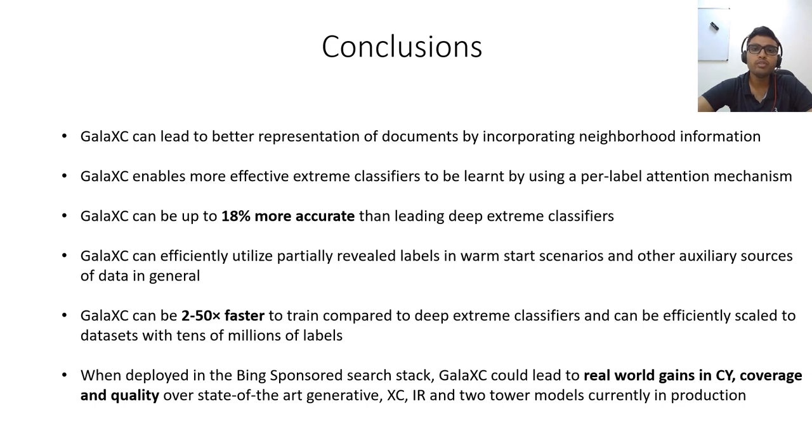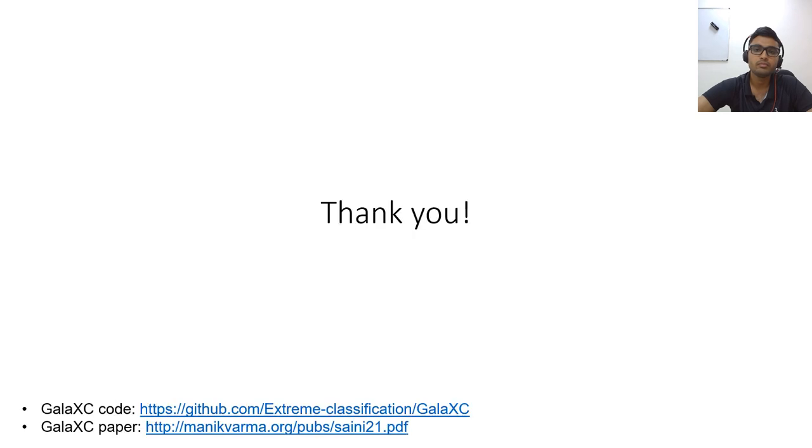Galaxy can be 2 to 50x faster to train compared to leading deep extreme classification algorithms and can be efficiently scaled to datasets with millions of labels. This helped it to be deployed in the Bing sponsored search stack with real world gains over state of the art generative extreme classification IR and 2 tower models. Thank you.